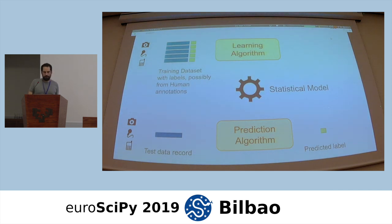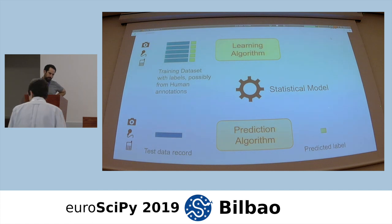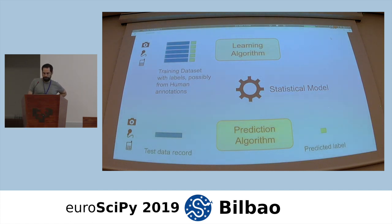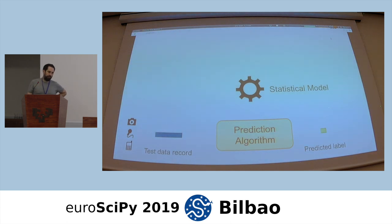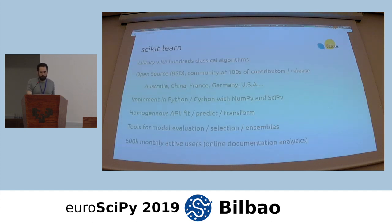Once you have this statistical model, you can use it for the prediction algorithm. The prediction algorithm takes the parameters of the statistical model as input along with another test record that you want to classify or regress, and you get the predicted label as an outcome, sometimes with some kind of confidence level. Once fitted, you can deploy the model without necessarily keeping a reference to the original data, because the statistical model is a summary that only preserves the interesting, repeatable part of the data.